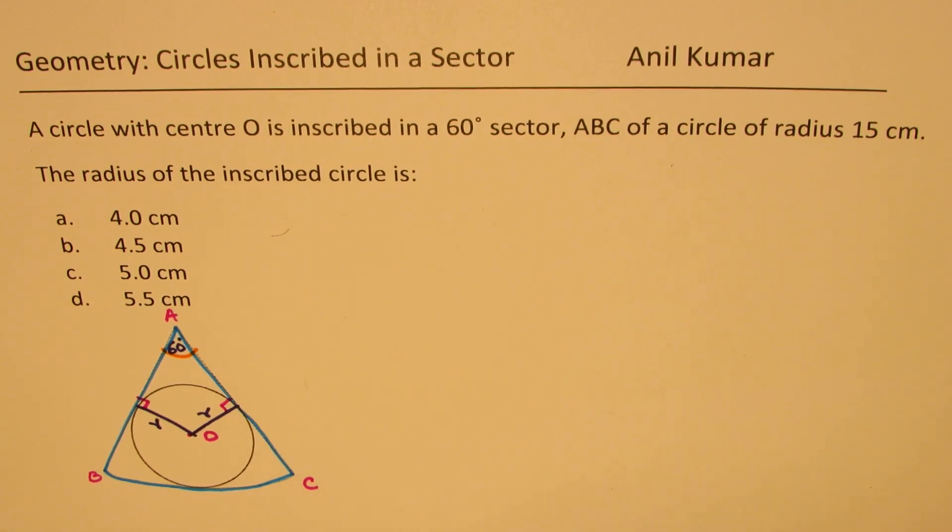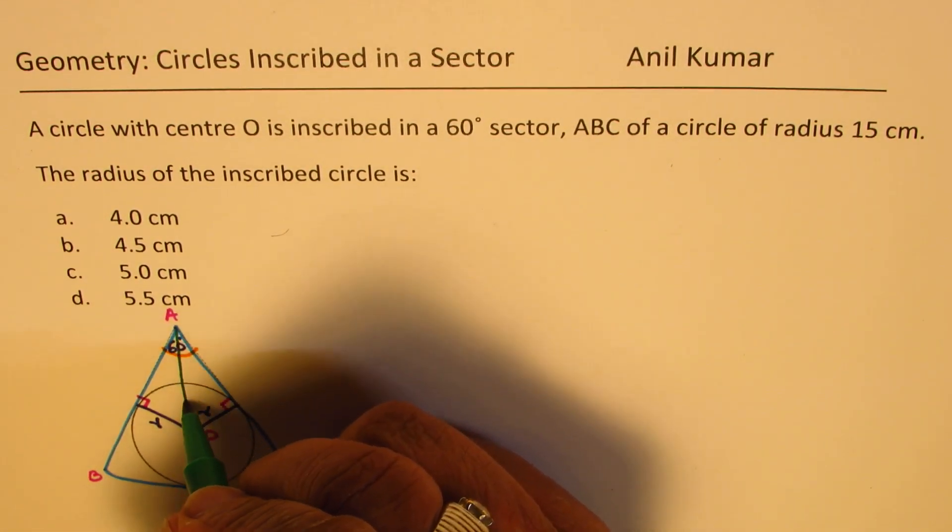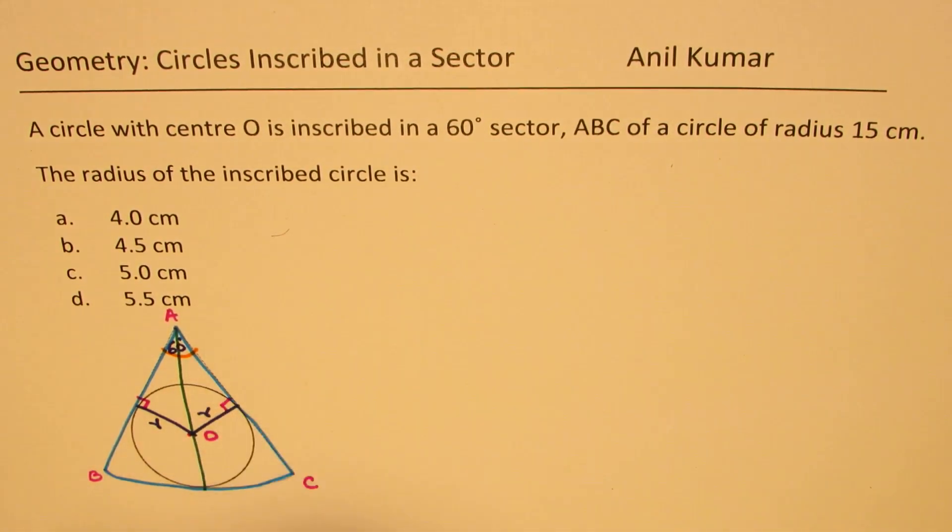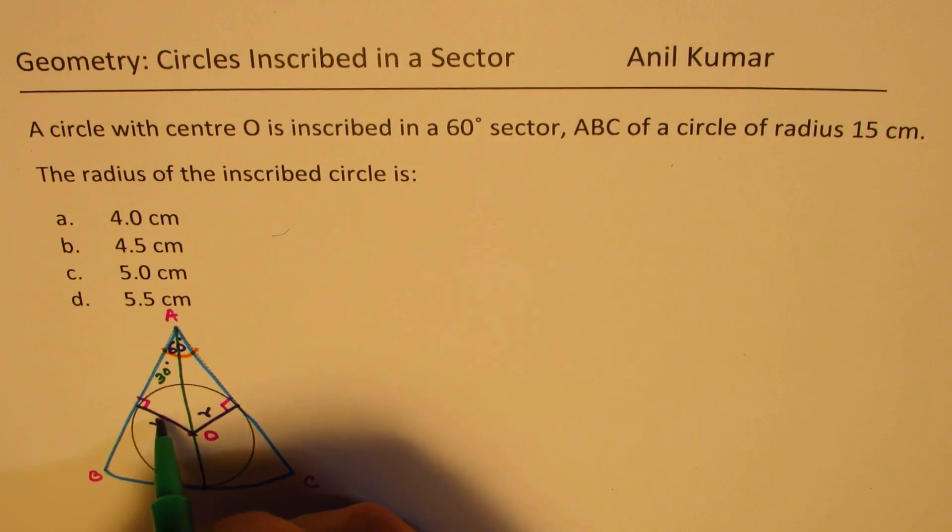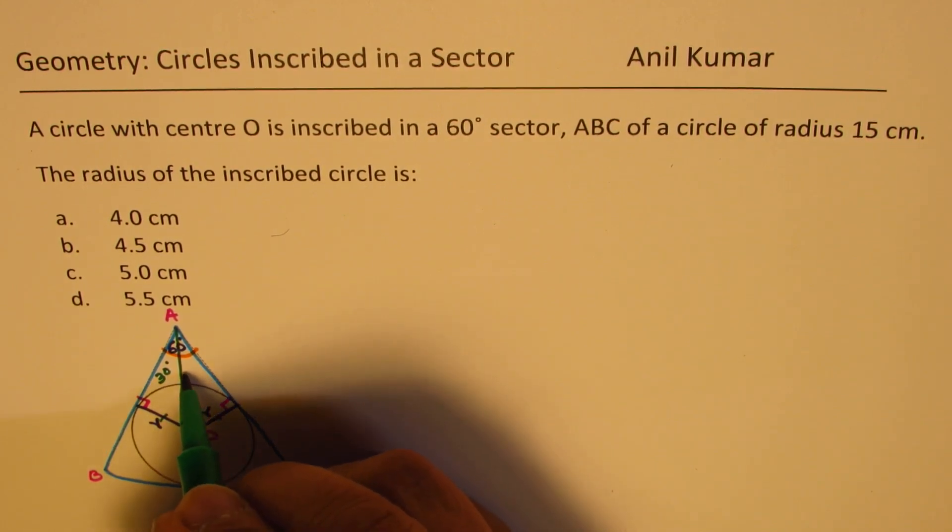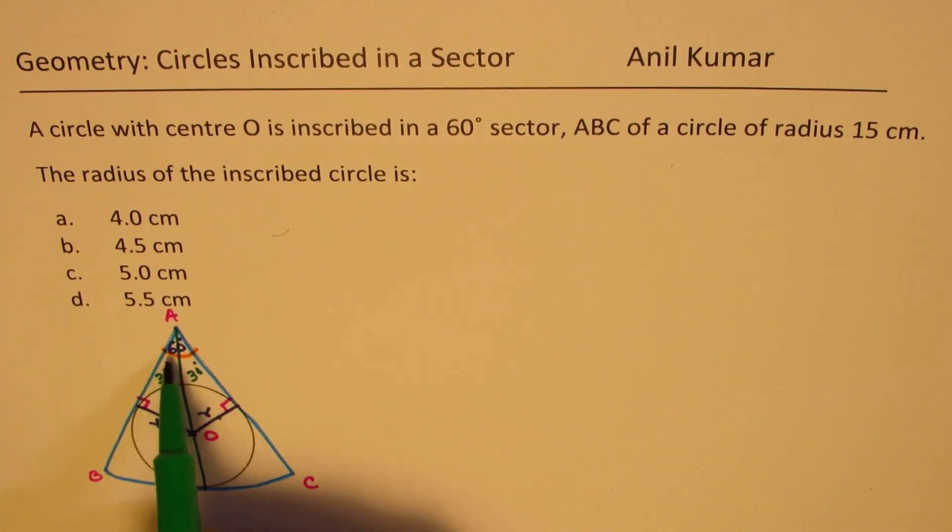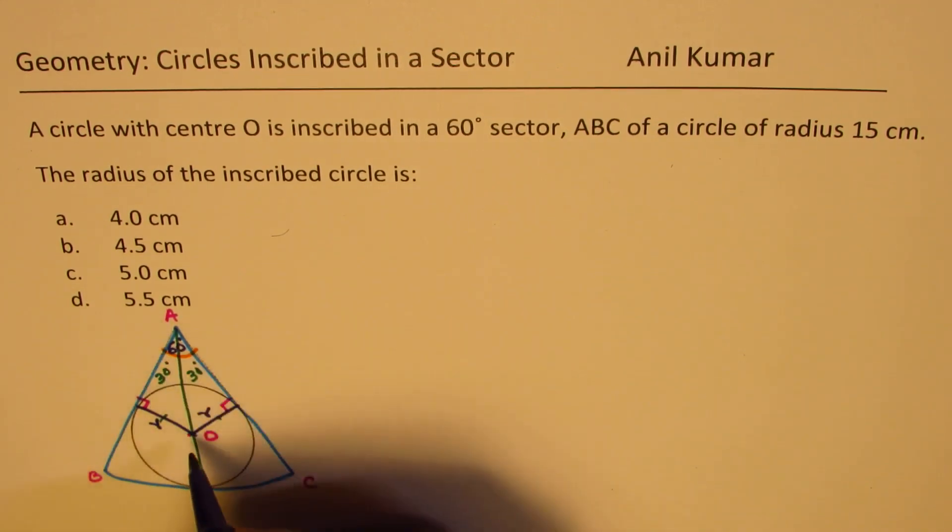Now, if I join AO and extend it, in that case, we'll have 30 degrees angle here. Since these two are equal from the symmetry, half of 60 will be 30 degrees. So we'll have a 30 degrees angle, which will be BAO.